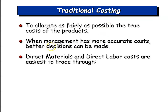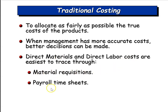With traditional costing — and really any type of costing — the goal is to allocate as fairly as possible the true costs of the products. If we don't get this right, we'll have a large reconciliation at the end of the period. When we have accurate costs, better decisions can be made. We don't want to underprice or overprice our product due to inaccurate factory overhead application. Direct materials and direct labor costs are easiest to trace through material requisitions and payroll timesheets, because both are prime costs.